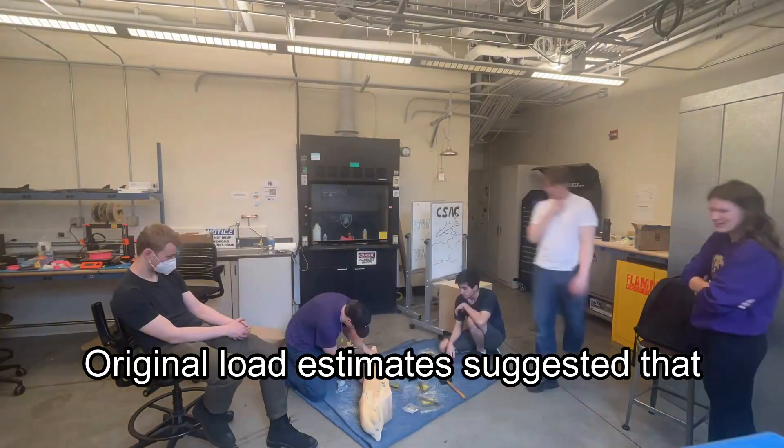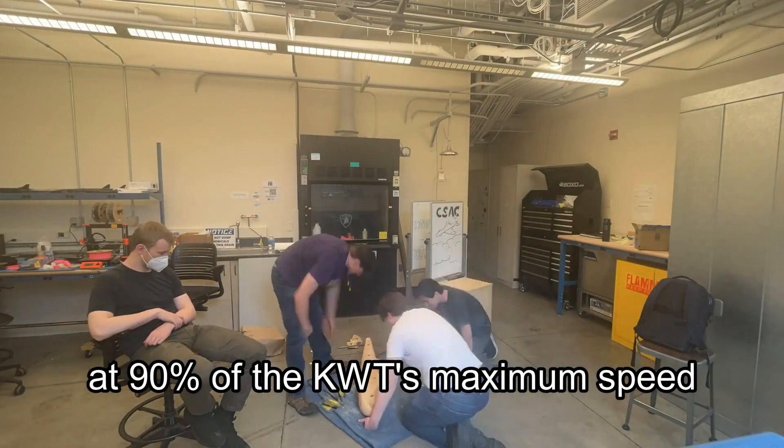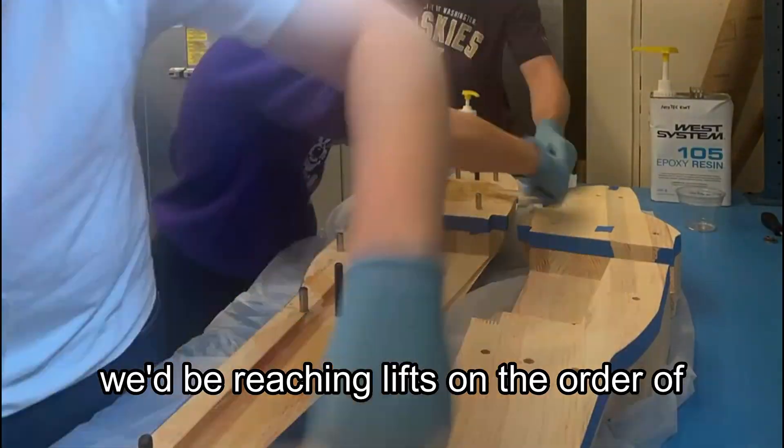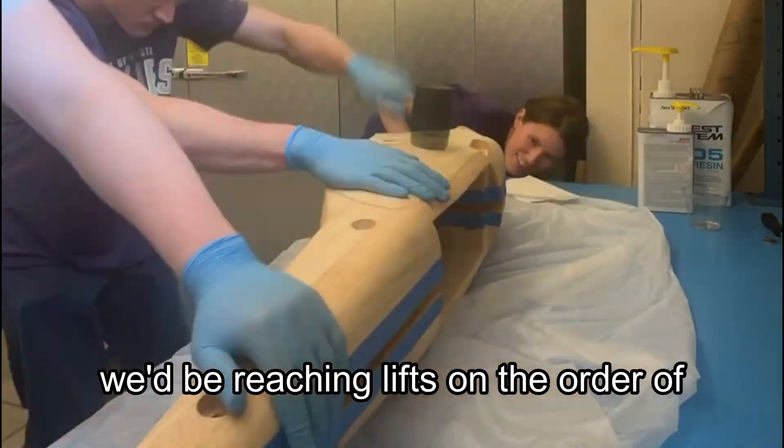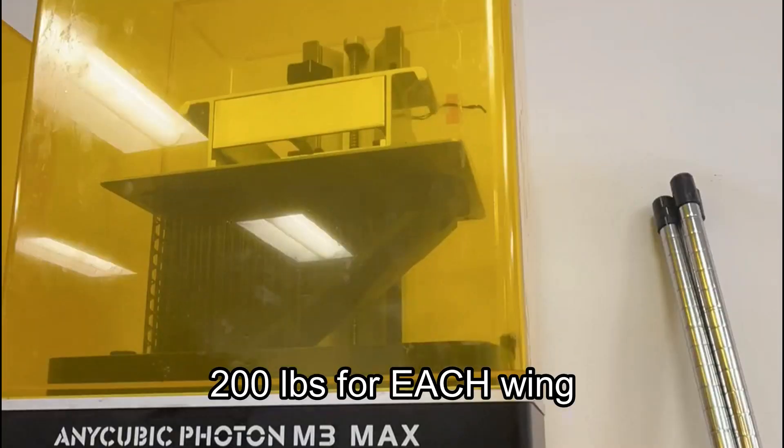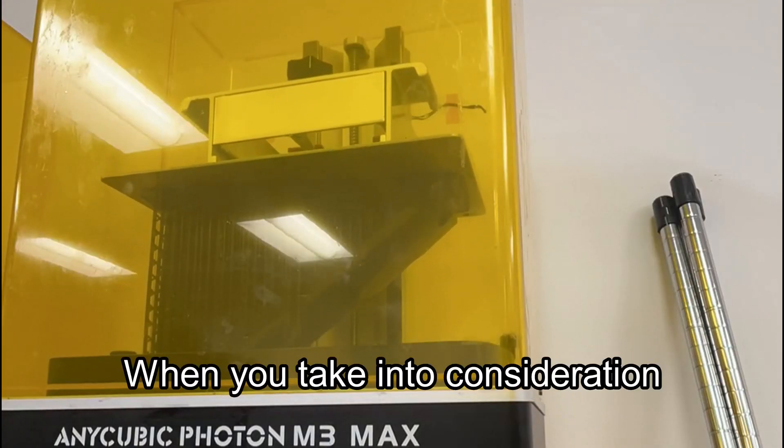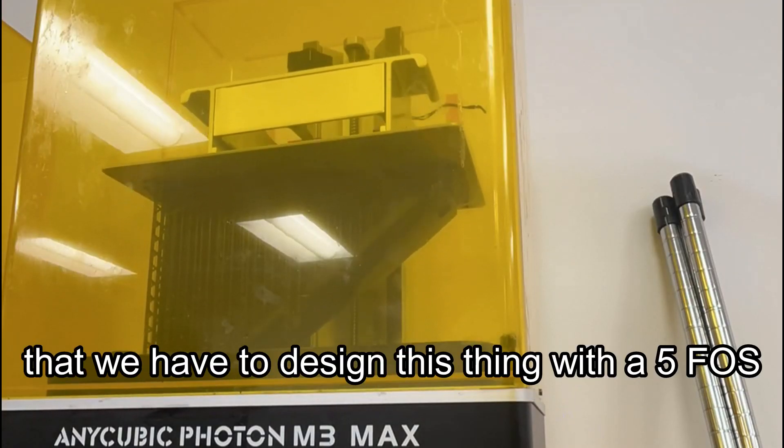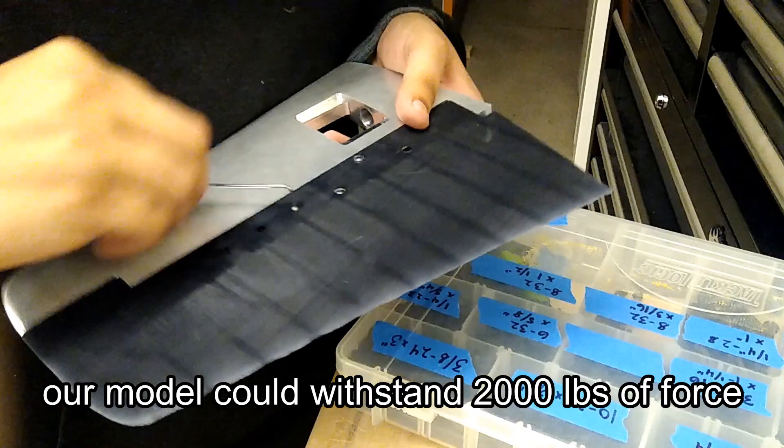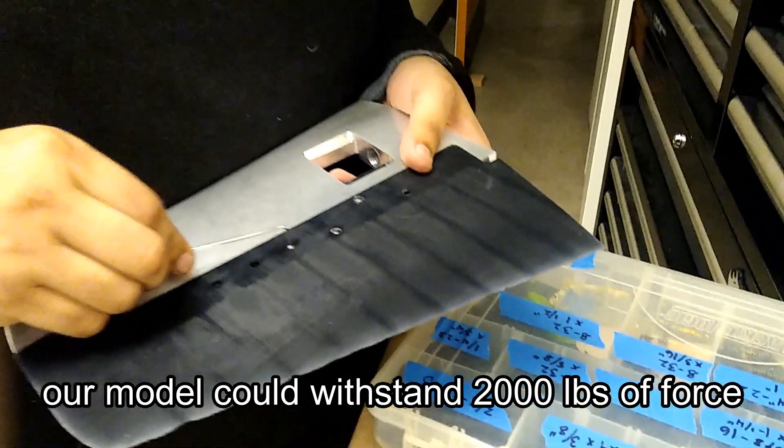Original load estimates suggested that at 90% of the KWT's maximum speed, we'd be reaching lifts on the order of 200 pounds for each wing. When you take into consideration we have to design this thing with a five-factor safety, that means that theoretically our model could withstand 2,000 pounds of force.